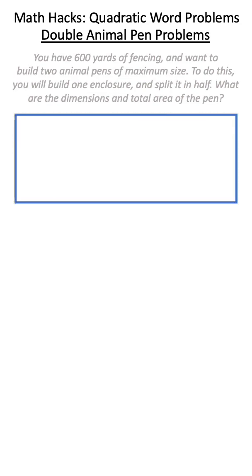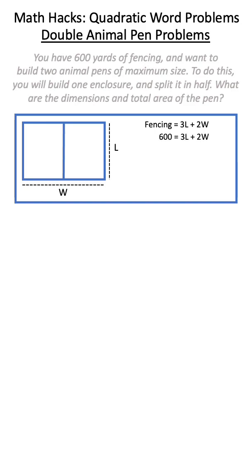The first thing we'll do is draw out our relationship. We have an animal pen that has a length and a width, and we'll split it in half. This means our total fencing will be split amongst three lengths and two widths, and we know this is equal to 600.